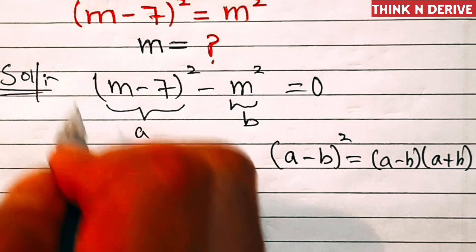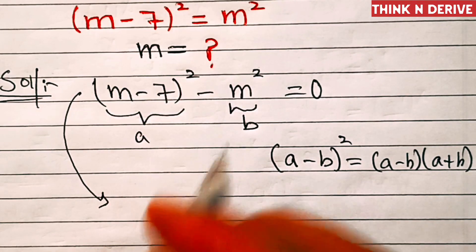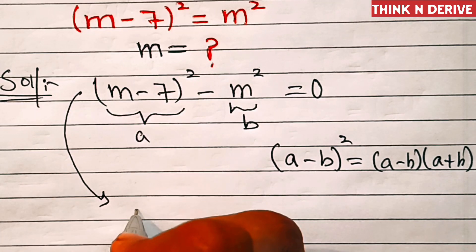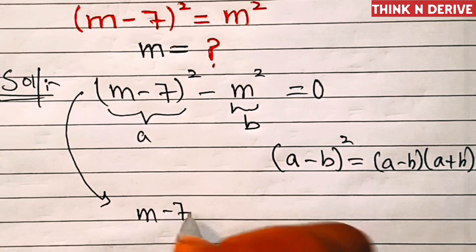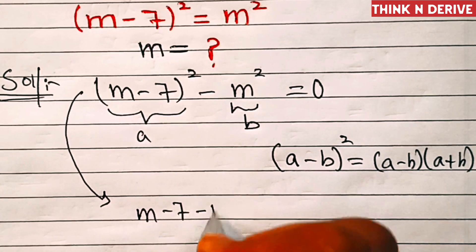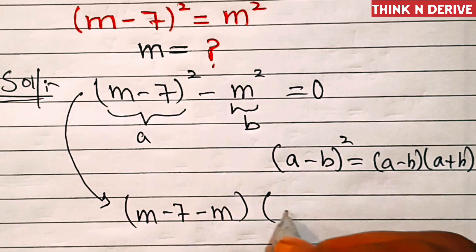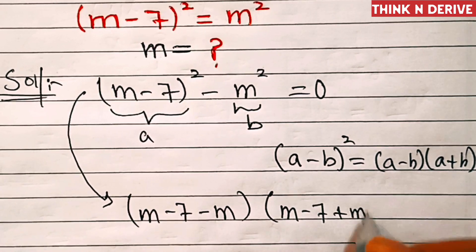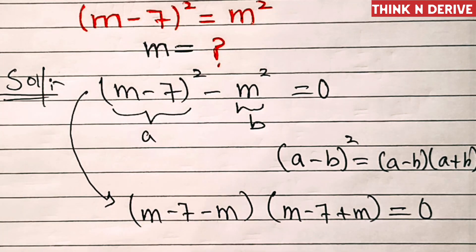So this will become m minus 7 minus m times m minus 7 plus m equals zero. Right?